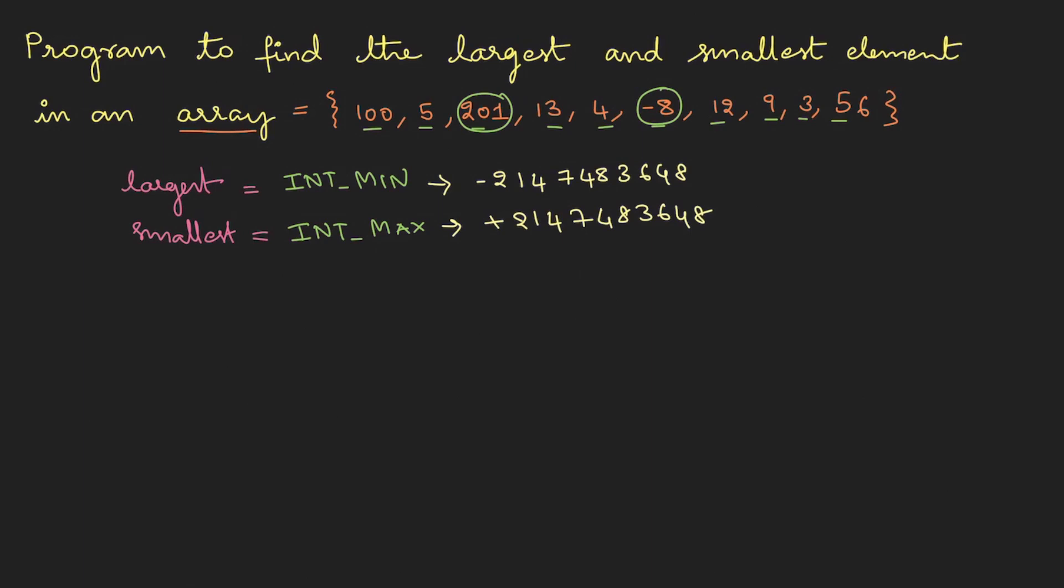Now you may have two doubts. First, what are these two INT_MIN and MAX? Secondly, how did I remember these big values? First, these two belong to limits.h header file, so in order to use these predefined constants you have to include limits.h. And the values, basically I did not memorize, I just googled it.